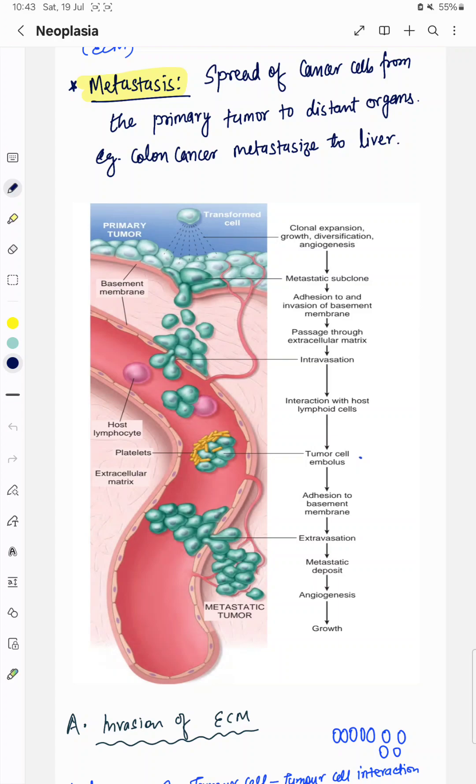By definition, metastasis is spread of cancer cells from the primary tumor site to distant organs. For example, colon cancer metastasized to liver.